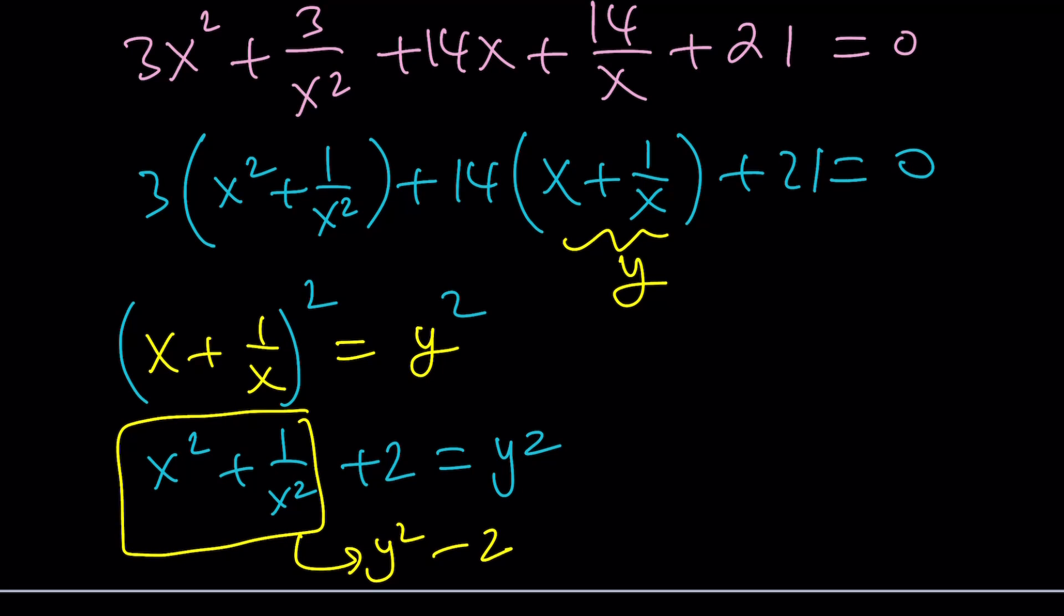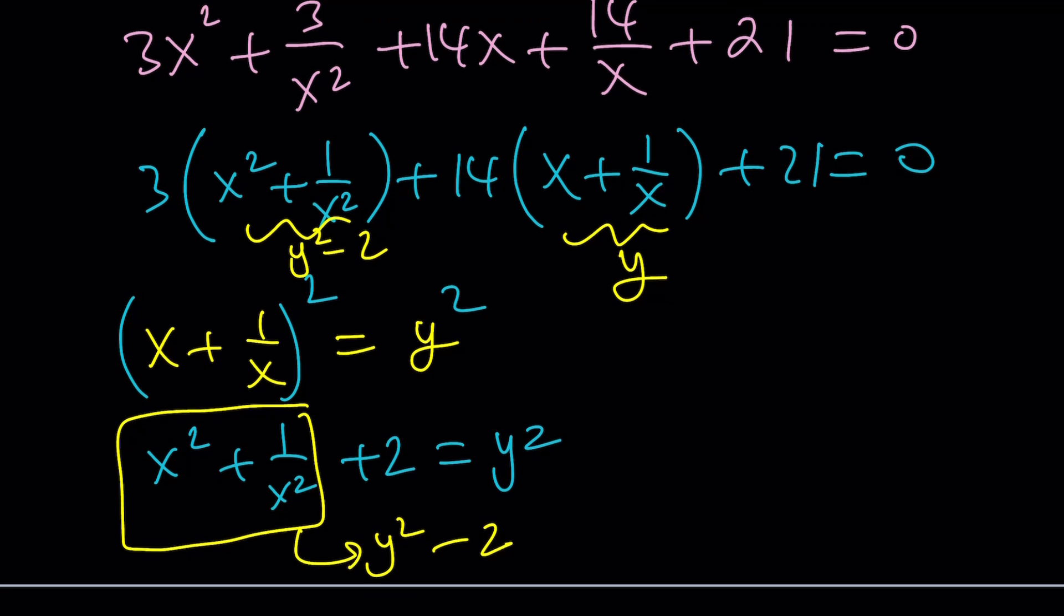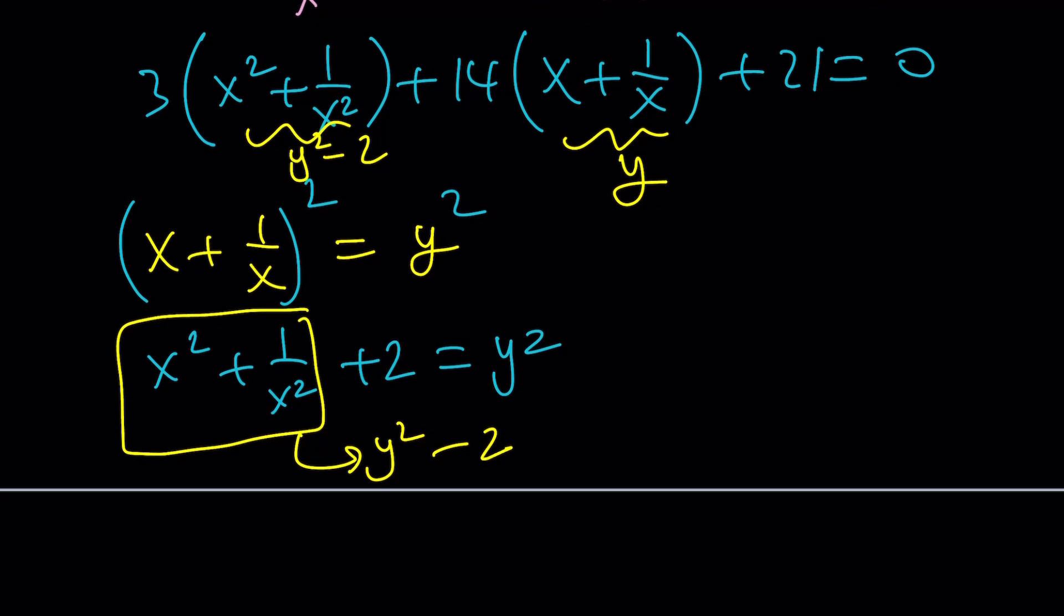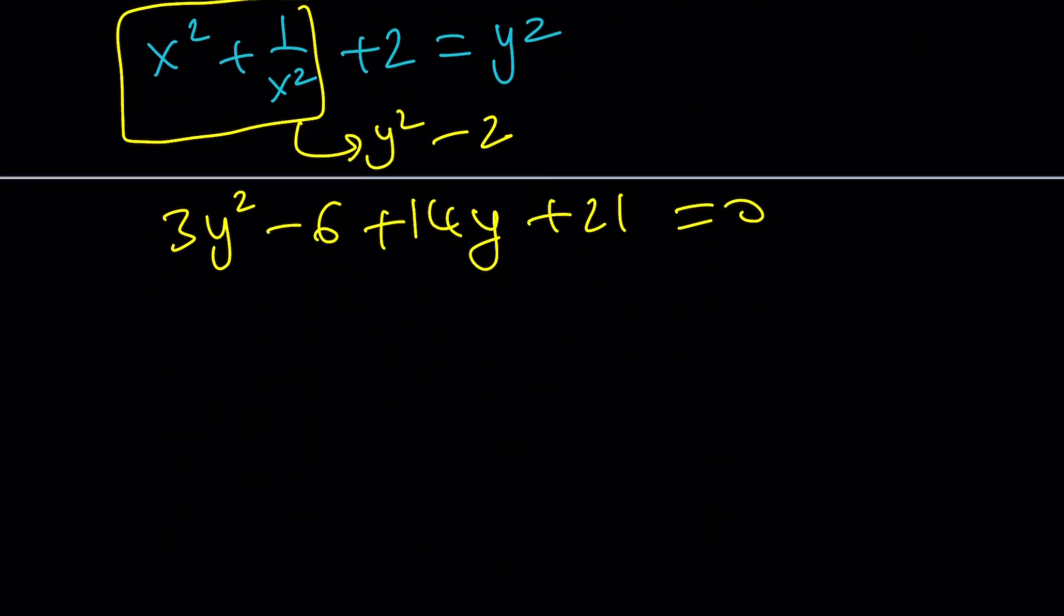So this is going to be y squared minus 2 and then we can now go ahead and use the new variable, distribute everything and simplify. That gives us 3y squared minus 6 plus 14y plus 21 equals 0. Obviously, that is a quadratic equation, a lot easier to solve than a quartic, right?